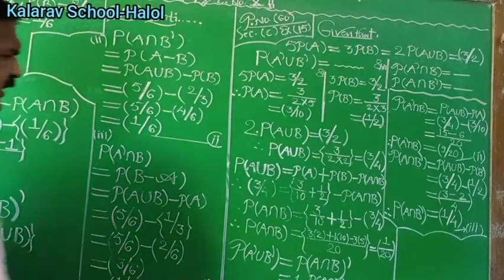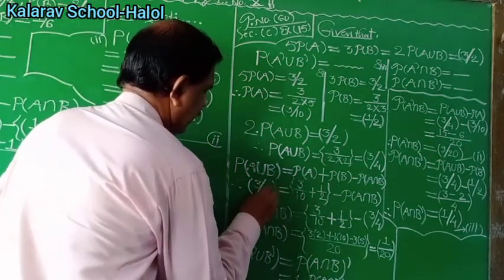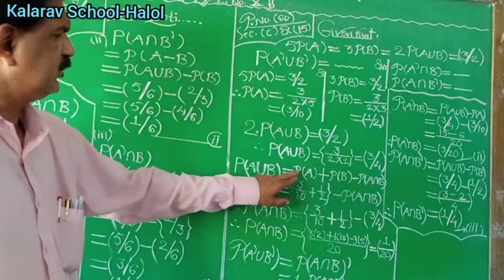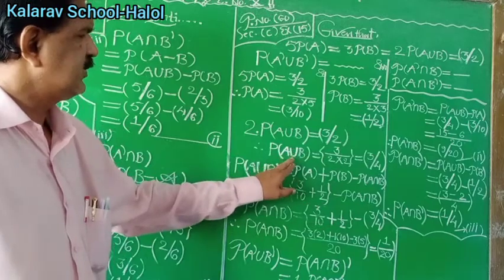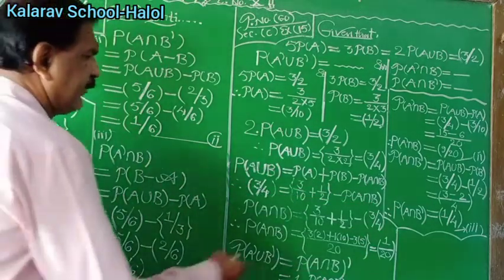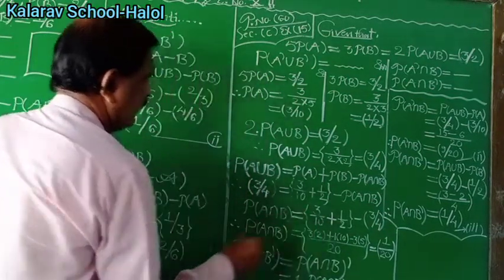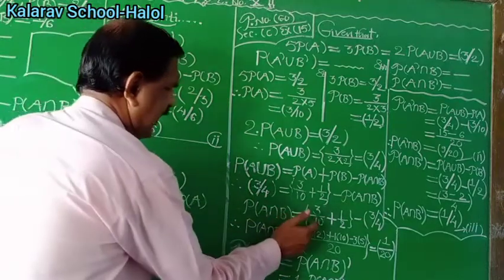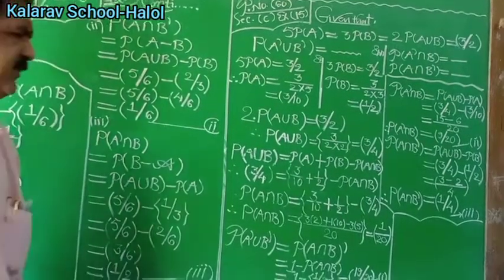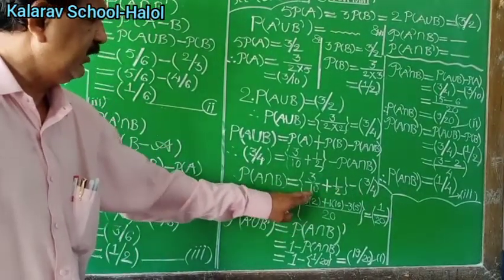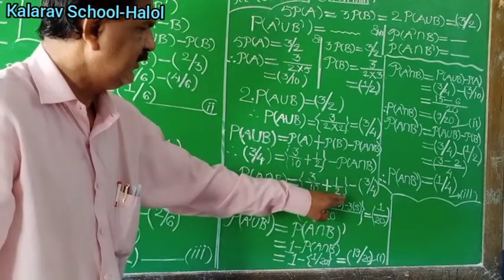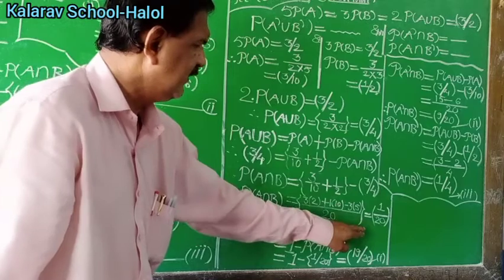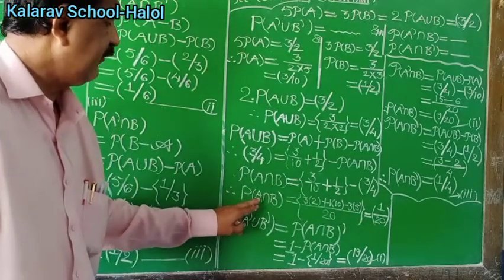Now by using the addition rule of probability: P(A union B) = P(A) + P(B) − P(A intersection B). Substituting: 3/4 = 3/10 + 1/2 − P(A intersection B). Rearranging, P(A intersection B) = 3/10 + 1/2 − 3/4. Taking LCM as 20: 6/20 + 10/20 − 15/20 = 1/20. Therefore P(A intersection B) = 1/20.